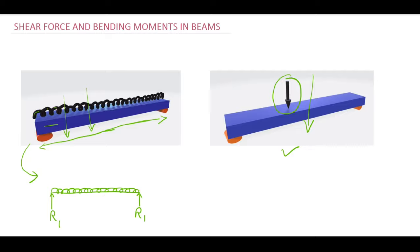The line diagram for the second beam is drawn as a horizontal line with roller supports. I will mark the reactions at those points as R1 and R2. There is a point load, which I will represent as an arrow.